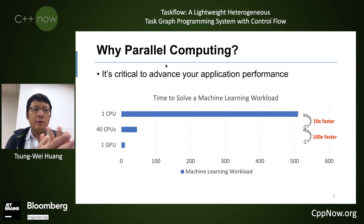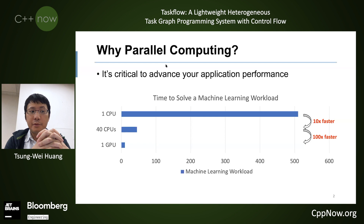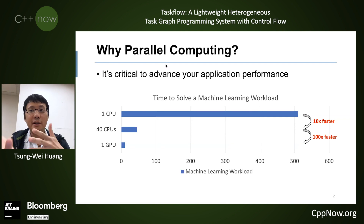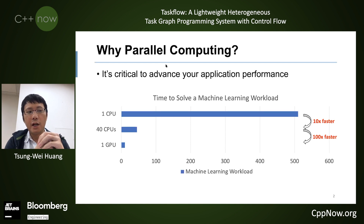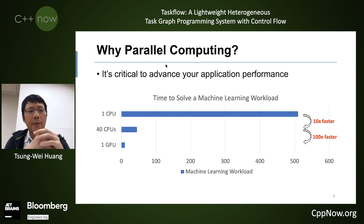You probably already know parallel computing is critical to advanced application performance. For example, a single-threaded machine learning program can take several hours to finish. But by using parallel computing, you can reduce the runtime to only a few minutes, or even a few seconds if you are able to run everything in parallel. That's the power of parallel computing — we leverage the many-core processing unit to speed up application performance by several orders of magnitude.